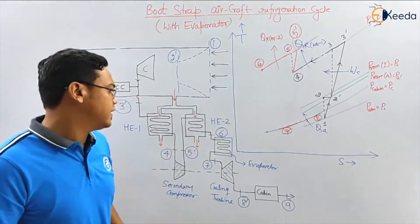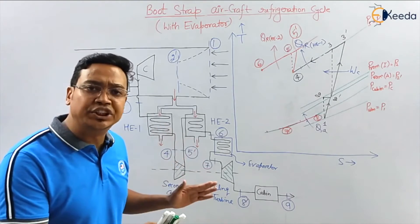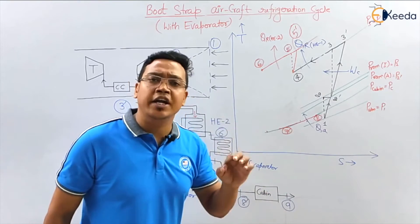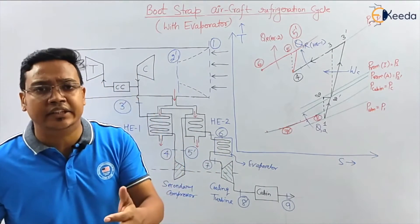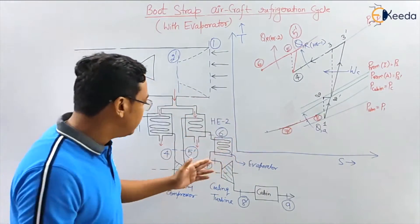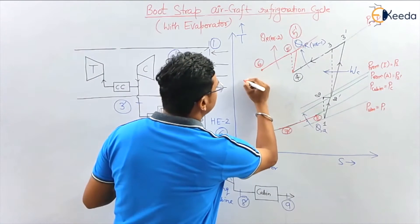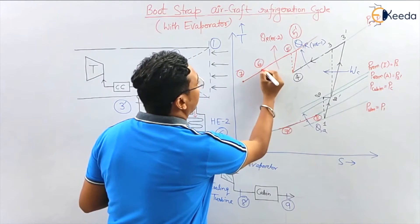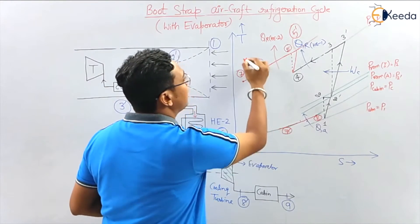From 6 to 7, air will go to the evaporator. At constant pressure, heat rejection will take place in the evaporator. The evaporator is also like a heat exchanger. On the T-s diagram, this is a constant pressure line, so point 6 moves to point 7, representing the heat rejected in the evaporator.